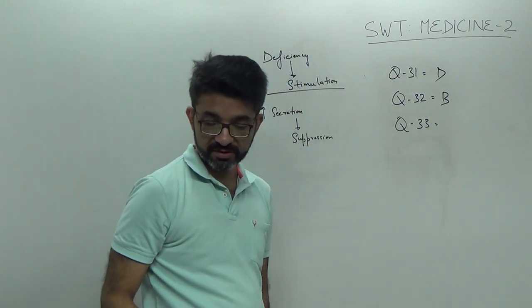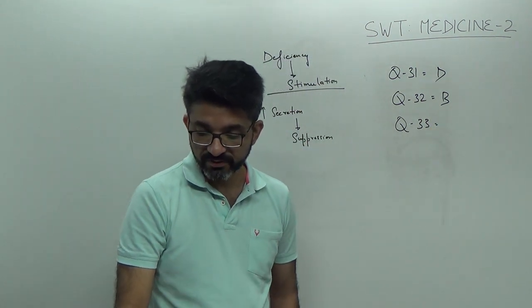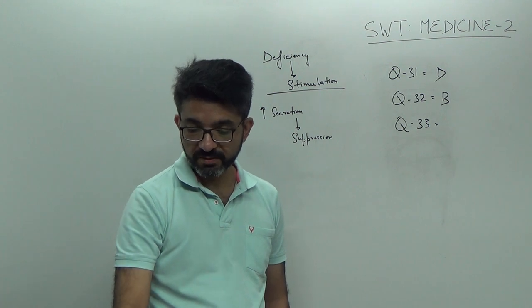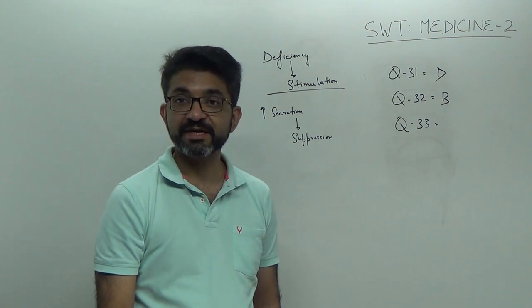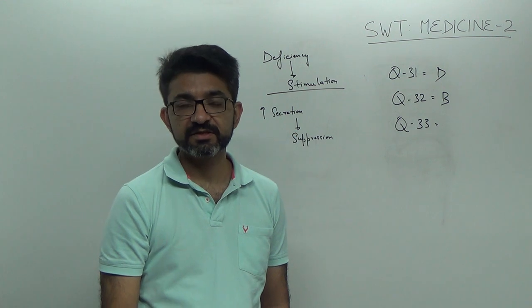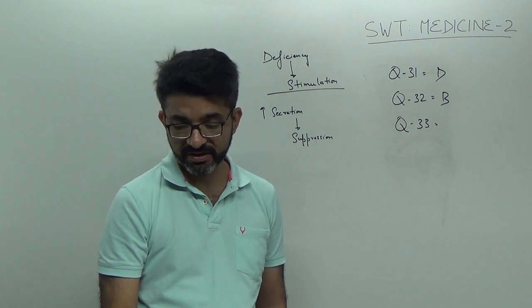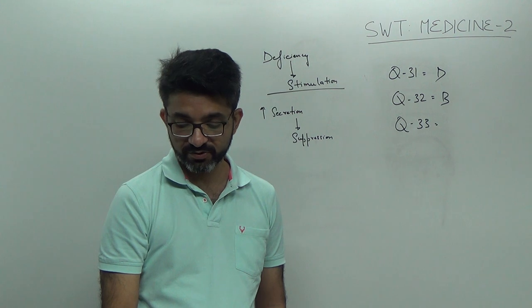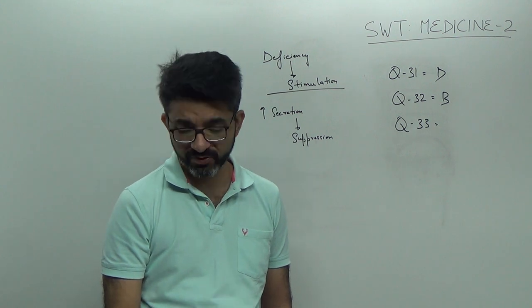Question number 33. A patient of 35-year-old coming to you with menstrual irregularity, galactorrhea, which shows that she has hyperprolactinemia, there is headache, there is bitemporal superior quadrantanopia. So, answer is pituitary macroadenoma.